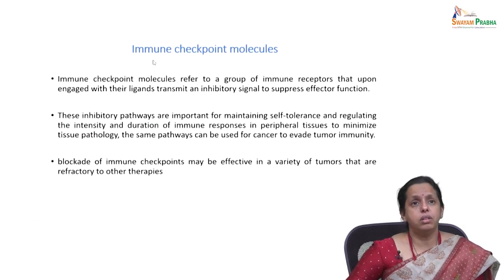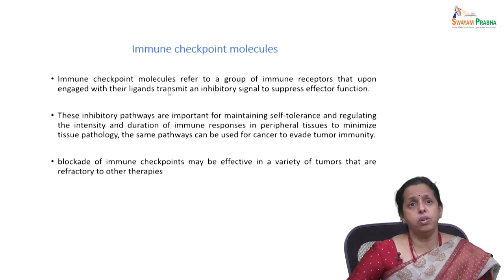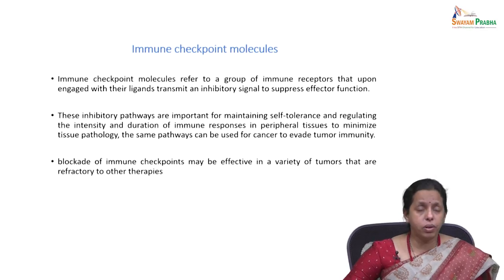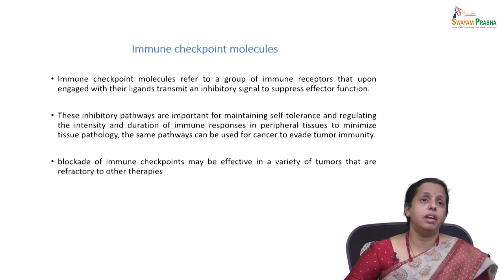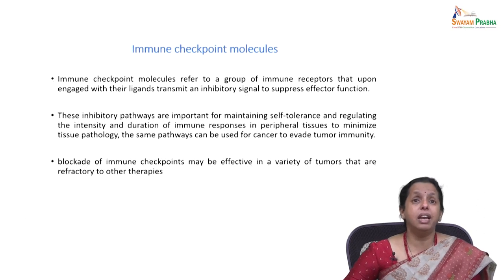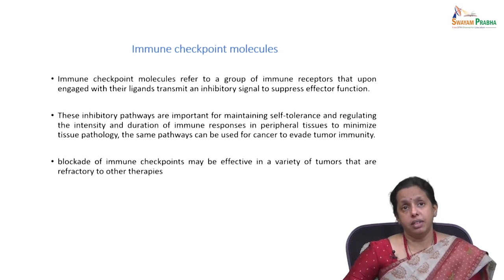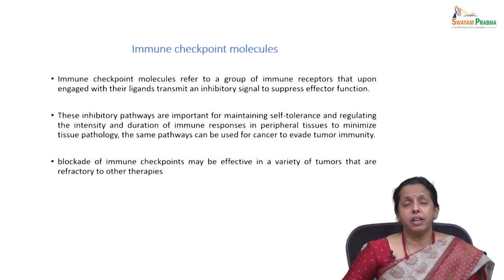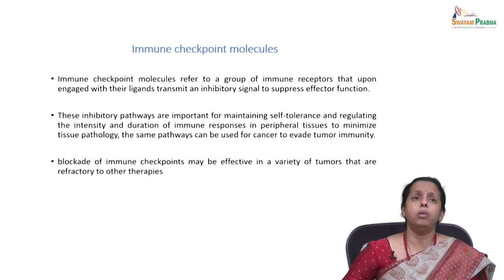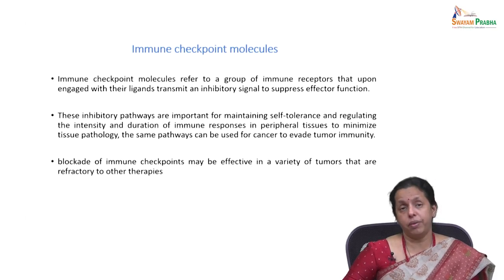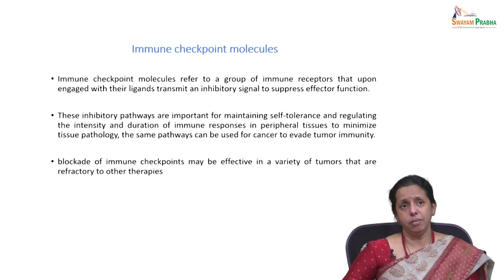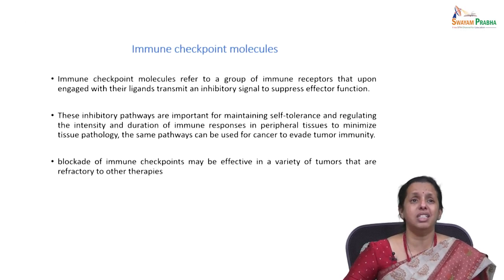Immune checkpoint molecules refer to a group of immune receptors that, upon interaction with their ligands, transmit an inhibitory signal to suppress effector function. First, we need to understand where exactly you have a ligand, then a co-stimulatory molecule, and what these immune checkpoint molecules are.